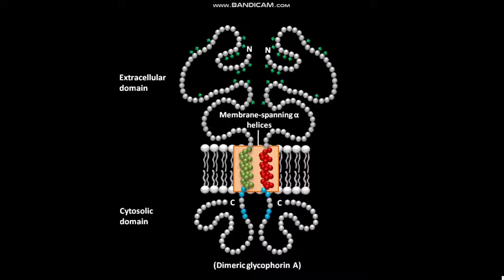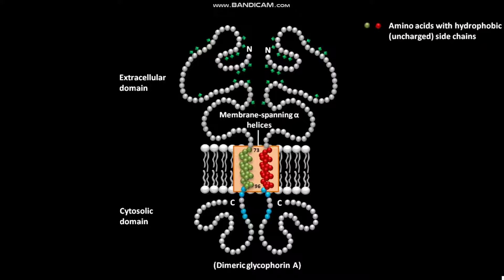Each alpha helix has 23 amino acid residues from positions 73 to 96. These amino acids have hydrophobic uncharged side chains. The positively charged arginine and lysine residues near the cytosolic side of the helix bind negatively charged phospholipid head groups. By this binding, they help anchor glycophorin A in the membrane.